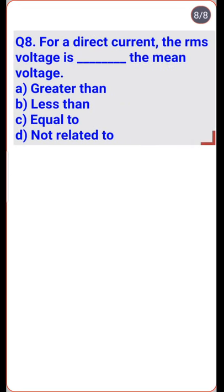For a direct current, the mean voltage value is the same as that of the RMS voltage — so option C is the right one.